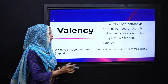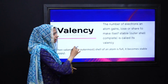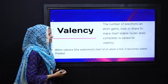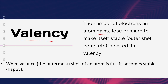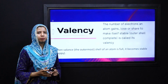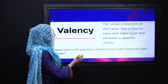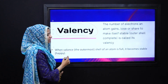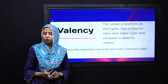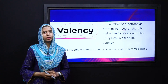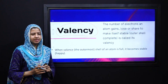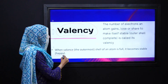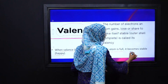Isi chiz ko, isi term ko hum kehte hain valency. Electrons ka aisa number jo ki gain kiya jaye, lose kiya jaye, ya share kiya jaye, taaki koi atom khud ko stable kar sake. Jab bhi kisi atom ke valence shell complete ho jaaye, octet rule ke mutabiq, toh wo khud ko stable kar sakta hai. And the atom is happy because it becomes stable.